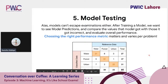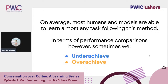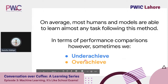On average, most models and humans can learn almost any task following these four steps. But sometimes you study hard and don't perform well on test day, and sometimes you barely study and perform really well. Just as this happens with humans, it can happen with machines too. These edge cases of underachieving and overachieving are two important scenarios to discuss.